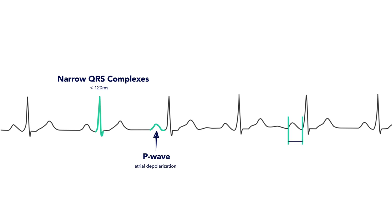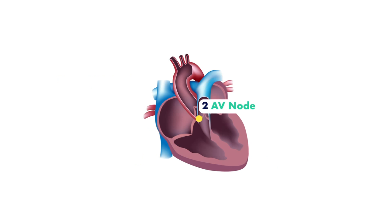Between these two waves is the PR interval, and in normal sinus rhythm this interval is always constant and less than 200 milliseconds. This represents the inherent delay of depolarization from the atria to the ventricles through the AV node.